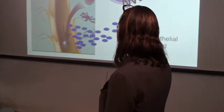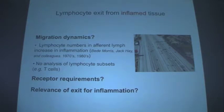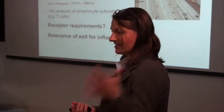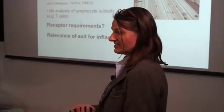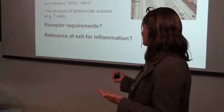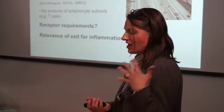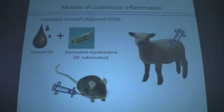This work was done mostly in the absence of inflammation at steady state. We then asked: what happens during inflammation? Not much was known. From sheep studies in the 1970s and early 80s by B. Morris, Jack Hall, and others, it was known that more lymphocytes drain a site of inflammation compared to uninflamed tissue. But those older studies had no analysis of different lymphocyte subsets, T cells specifically, or receptor requirements. We were interested in how relevant this exit step is for the course of inflammation.